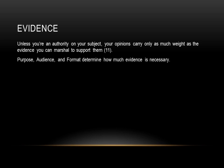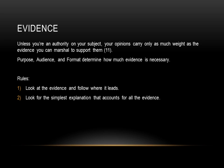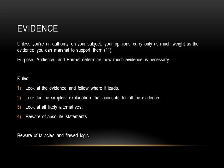E is for evidence. As a direct quote from the reading states: unless you're an authority on your subject, your opinions carry only as much weight as the evidence you can marshal to support them. The P, A, and F help determine how much evidence is necessary. Look at the evidence and follow where it leads. Look at the simplest explanation that accounts for all the evidence — we call that Occam's razor. Look at all likely alternatives and be aware of absolute statements. The level of evidence largely depends on the audience: if your audience is already on your side, you'll need less compelling evidence than when presenting to a hostile audience.